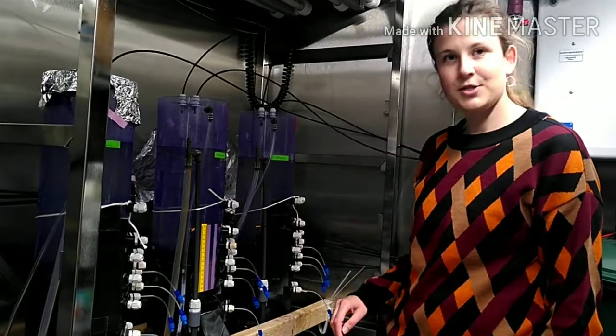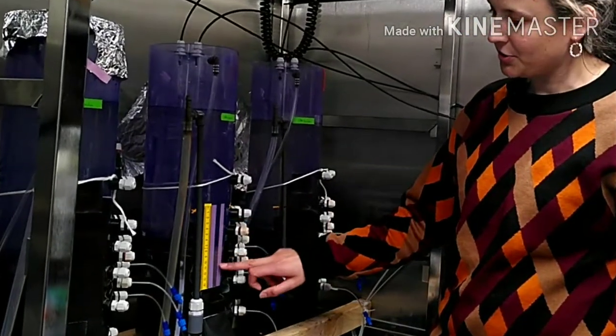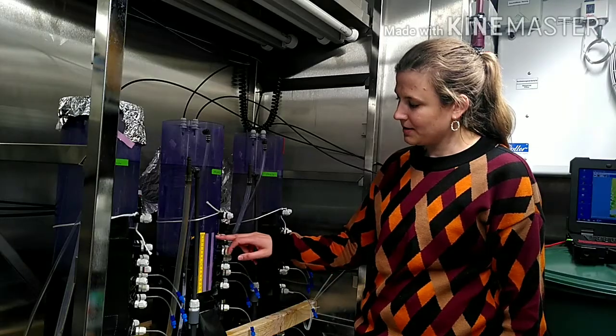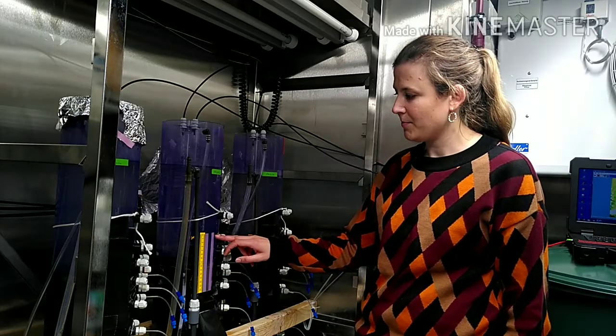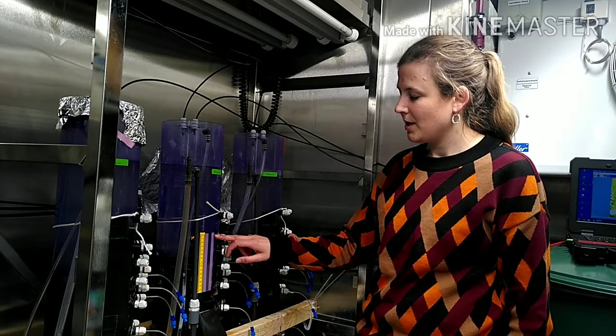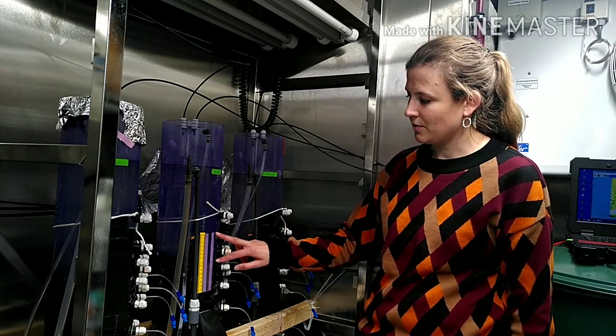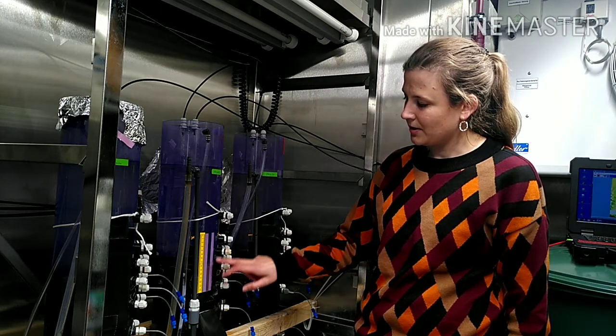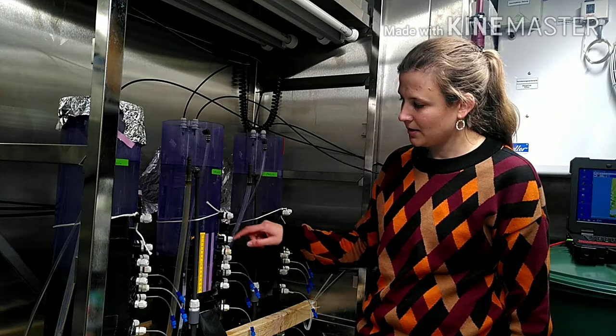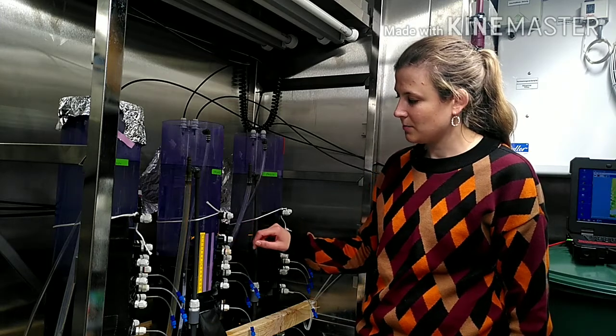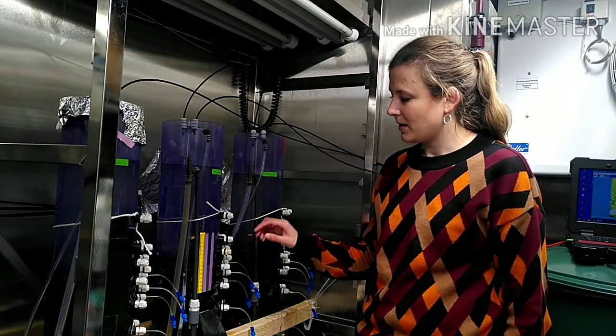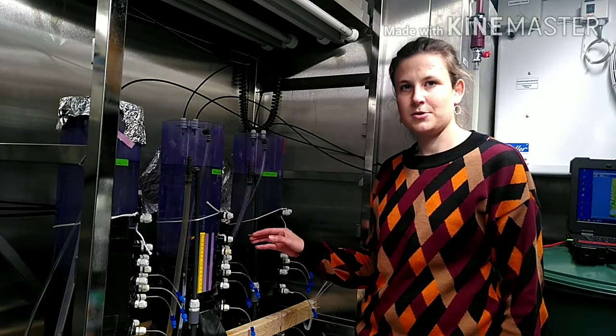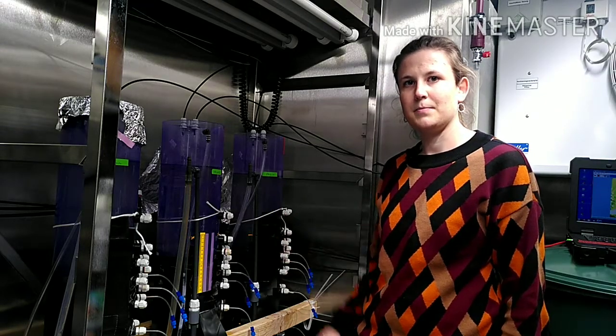In order to measure oxygen, I have these oxygen-sensitive foils in every column. With these foils and a special camera, I'm able to measure oxygen within the surface water and the sediment. Each sensor stripe is 15 centimeters long and 1 centimeter in width. And with the system, I'm able to visualize my oxygen content in the different compartments.